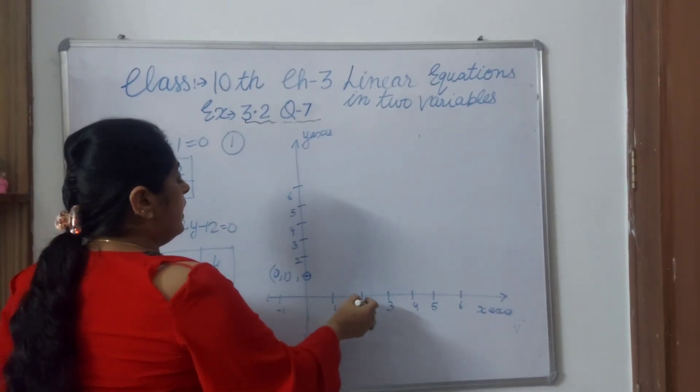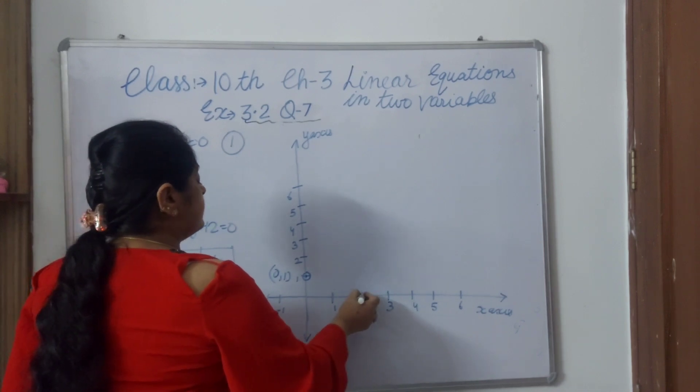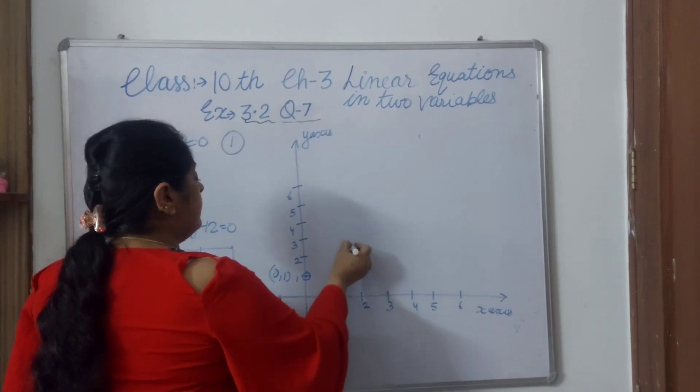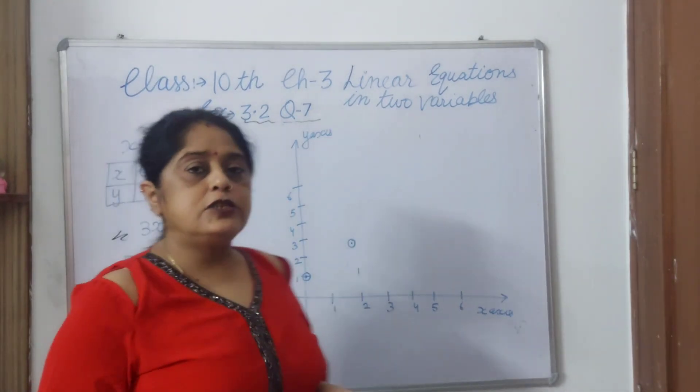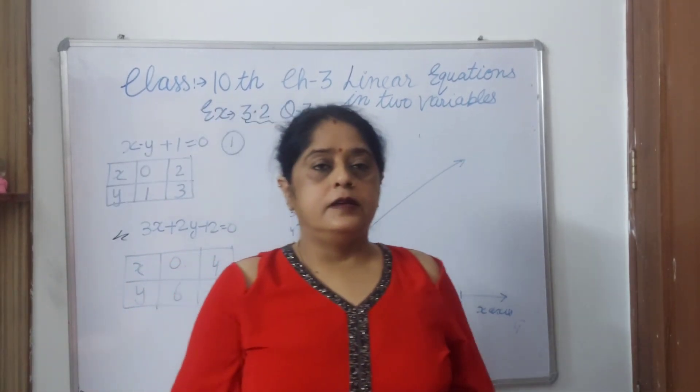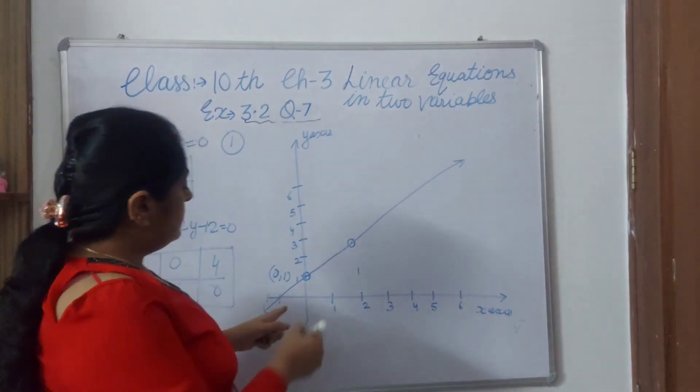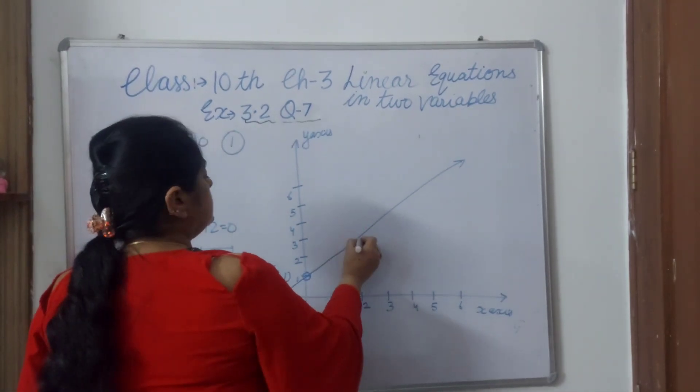Because you know that on the y-axis, x is 0. 0 and 1. Now x is 2 and y is 3. x is 2 and y is 3, here you get this point. Now we will join these two points by joining these two points, and this point is 2, 3.